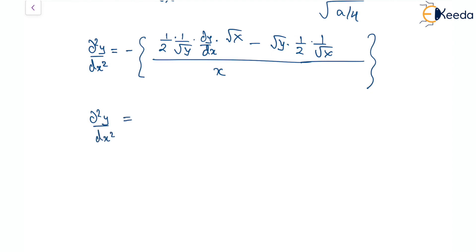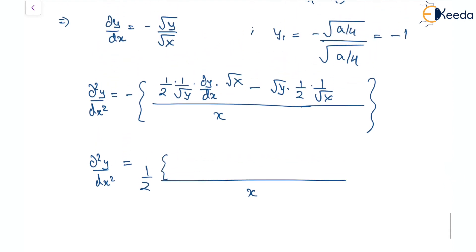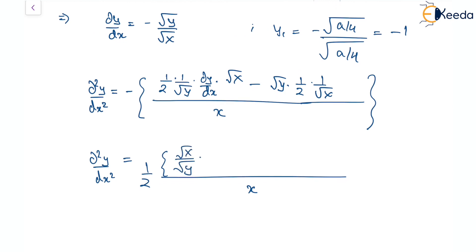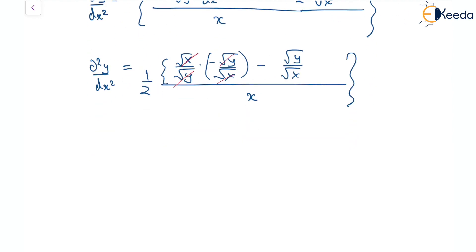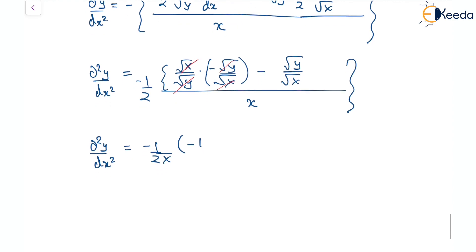Taking 1/2 common from both terms and substituting dy/dx = −√y/√x, terms cancel and we get d²y/dx² = (1/2x)(1 + √y/√x).